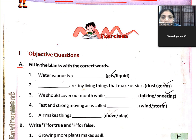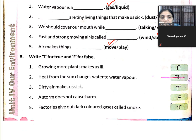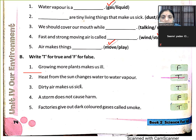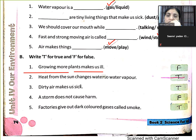Now, objective question answers. Fill in the blanks with correct words. Water vapour is a gas. Tiny living things that make us sick are called germs. We should cover our mouth while sneezing. Fast and strong moving air is called storm. Air makes things move. Growing more plants does not make us ill — that is false.